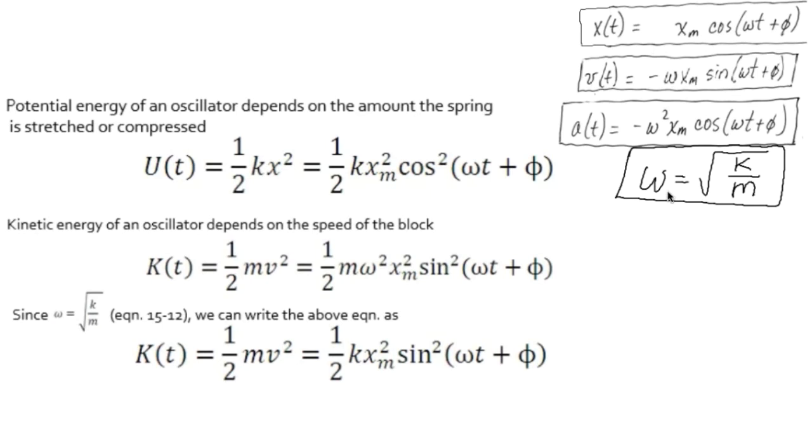Substituting in for omega here, the square root of k over m, when we square it, we get k over m. The over m crosses off with this m, and we're left with just k. So our expression for kinetic energy then is one half kx max squared sine squared.